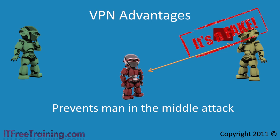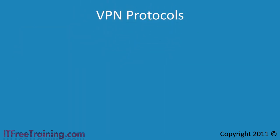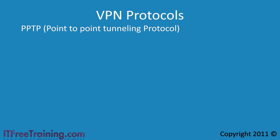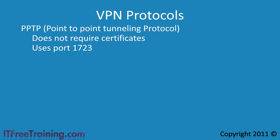Now that you understand the advantages of VPNs, you need to decide which protocol to use. Windows 7 supports four different protocols. The first is Point-to-Point Tunneling Protocol or PPTP. This is considered the weakest VPN protocol because it does not require certificates, but that also makes it one of the most commonly used protocols since it is easy to set up. To use PPTP you need to have port 1723 open.